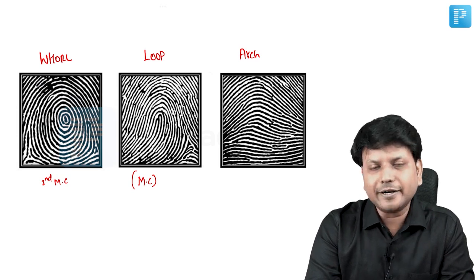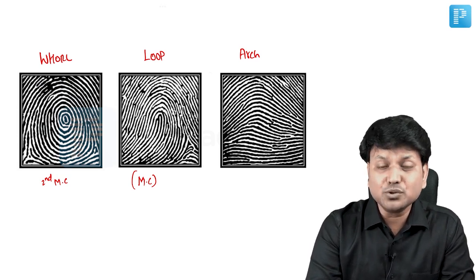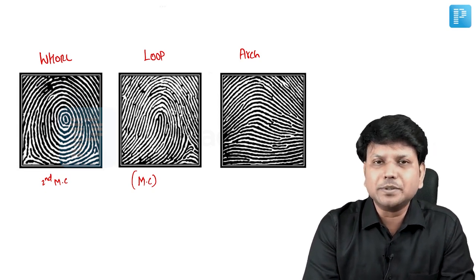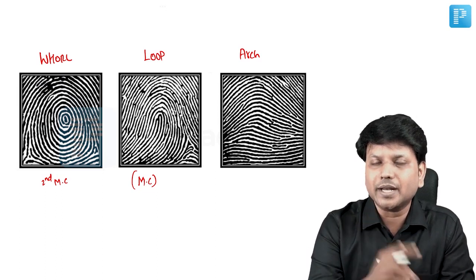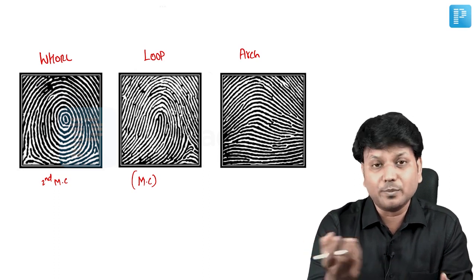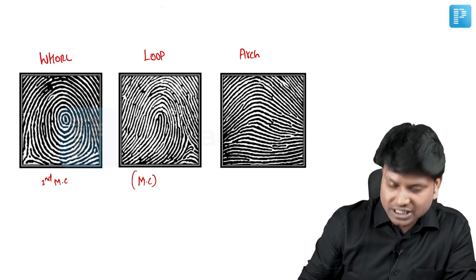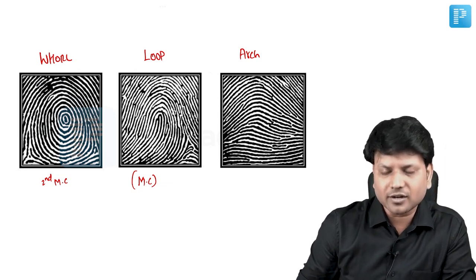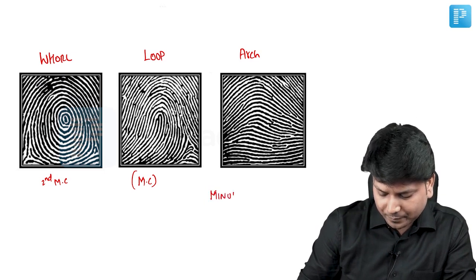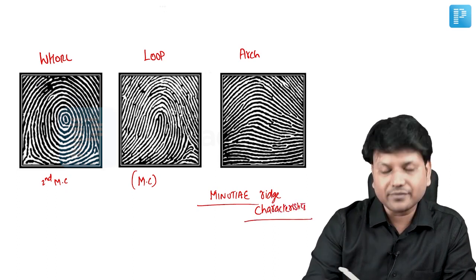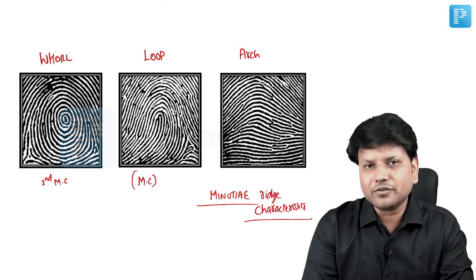Since loop patterns are common among 65% of people, to identify an individual person we do not look at the pattern alone — we need to look at what are called ridge characteristics or minutiae. We examine the minutiae to identify the person, which we have discussed in detail in regular lecture videos.